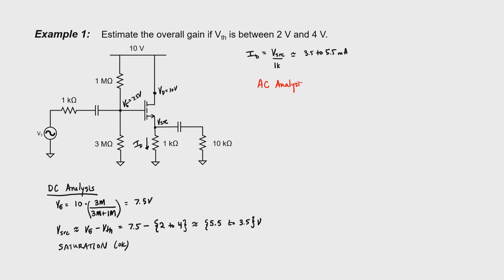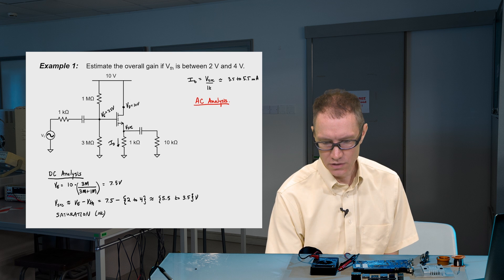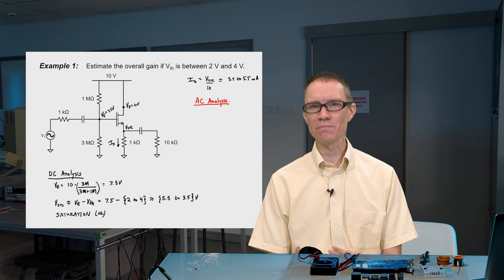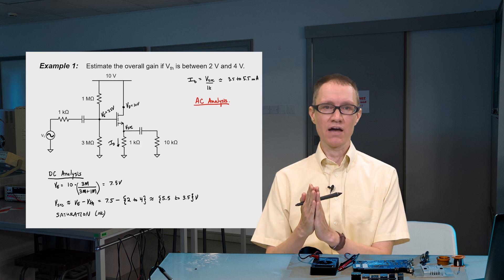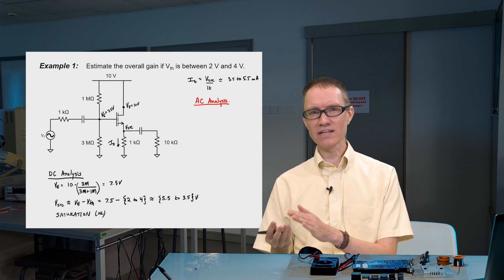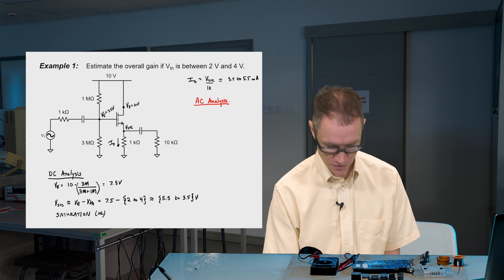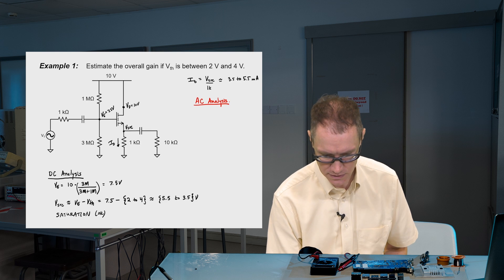Let's proceed to our AC analysis. The AC analysis for MOSFETs tends to be somewhat simpler than for bipolar transistors, because we don't really have to worry about impedance reflection. Because we have a very high input impedance, the gate is not really attached to the drain or the source, so we don't have to worry about current being shared across the transistor — that really simplifies things. On this circuit, we have our signal, our signal impedance of 1 kilohm, and now we have an input impedance — assuming large capacitors — of 1 megohm in parallel with 3 megohms, which gives us 750 kilohms.